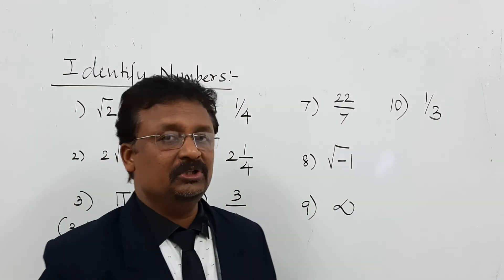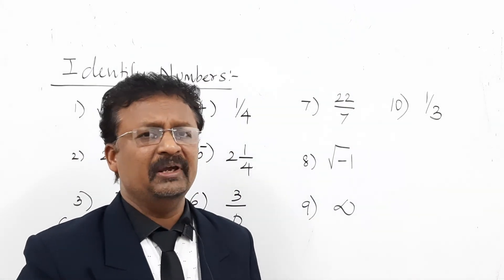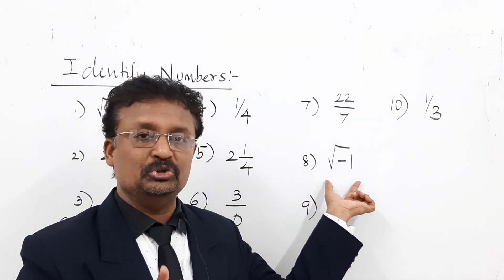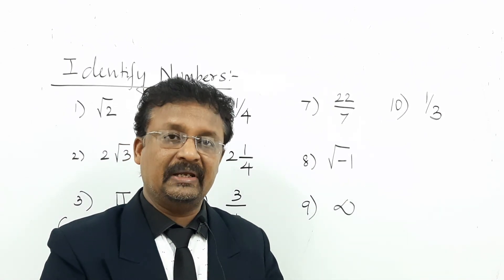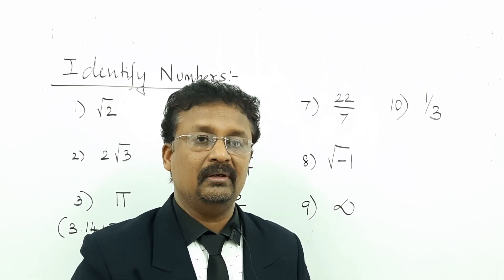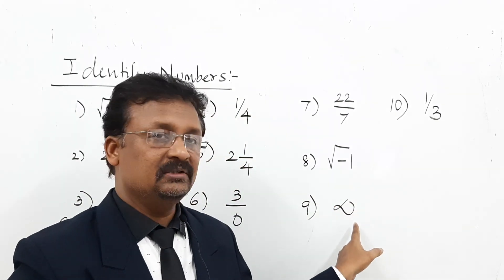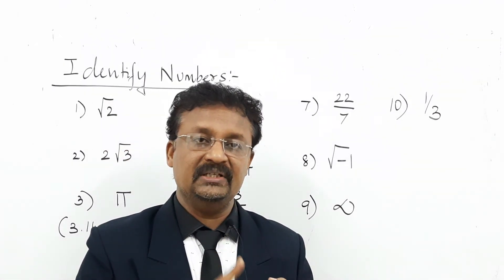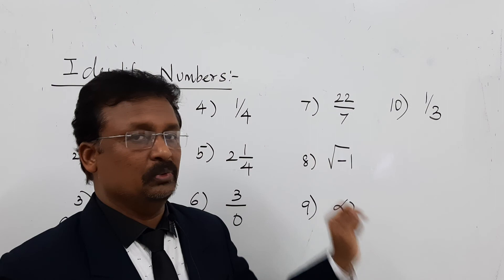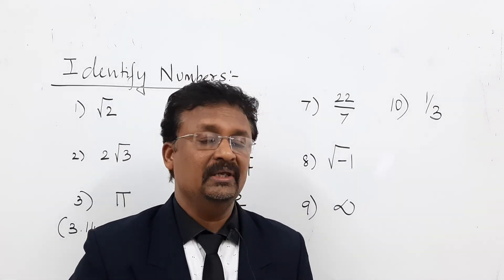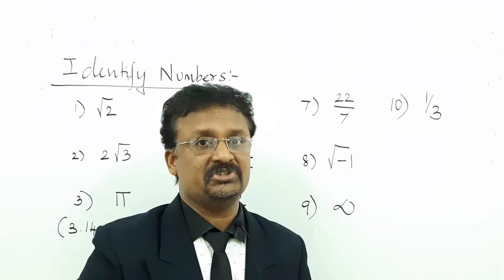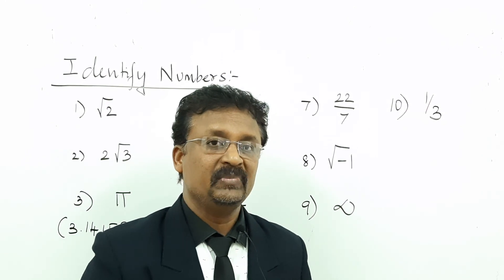Seventh example: 22 by 7 is a rational number — it is in P by Q form with Q not equal to 0. Eighth example: square root of negative 1 is not a real number. For comparison, square root of 16 gives 4 on a calculator — that is real — but square root of negative 16 gives a math error, which means it is not a real number. Ninth: infinity is a symbol representing undefined, so it is not a real number. Tenth: 1 by 3 is a rational number; its value is 0.333333, which is repeating and non-terminating, and it is in P by Q form with Q not equal to 0.